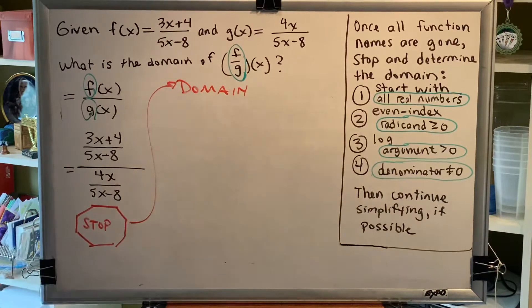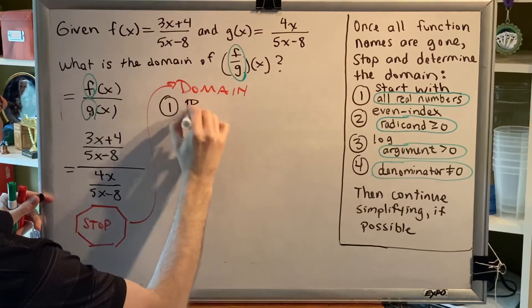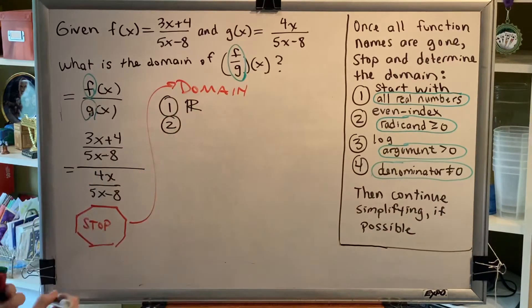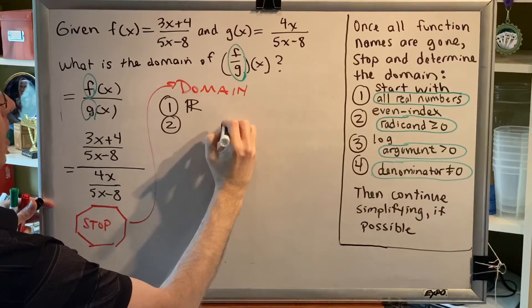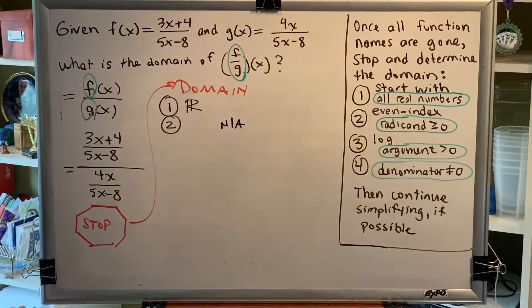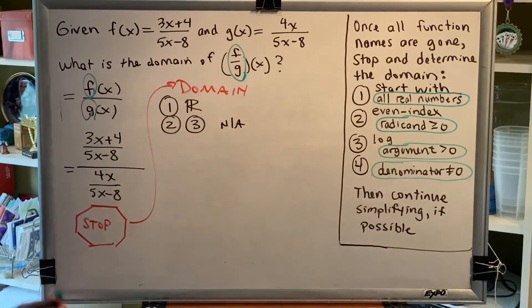Let's go through the four steps together. Step one is to start with all real numbers. Step two is to look for even index radicals. There are none, so step two is not applicable. Step three is to look for log arguments. There are none, so step three is also not applicable.